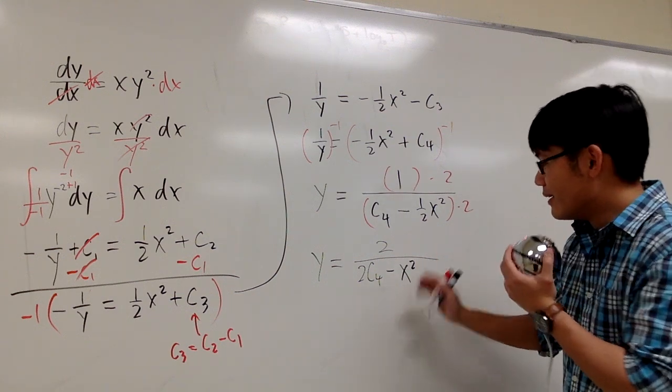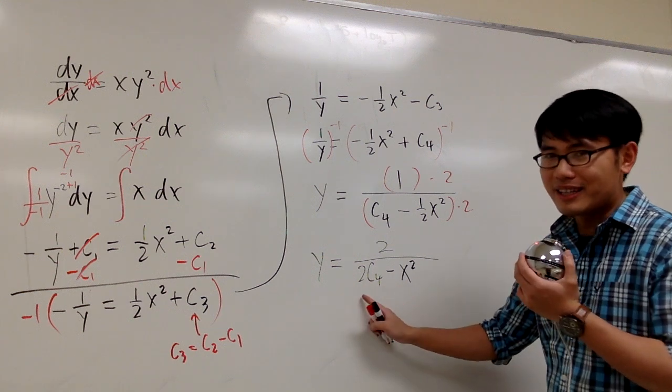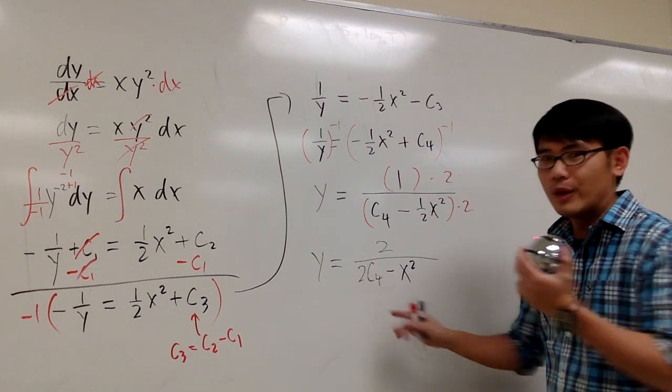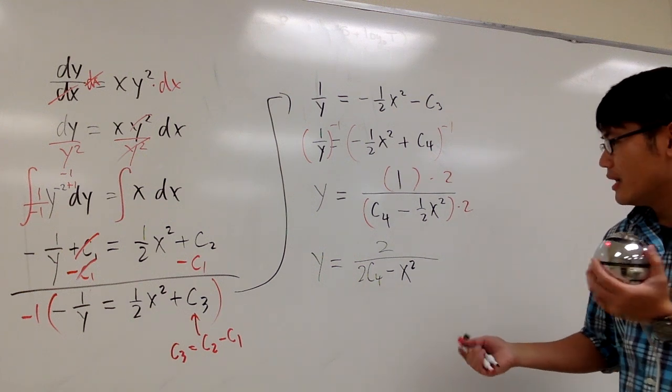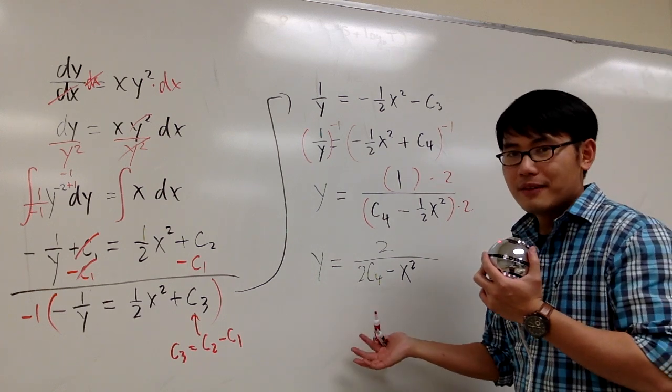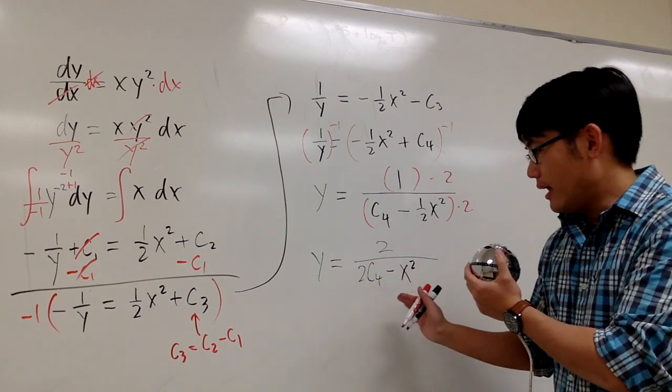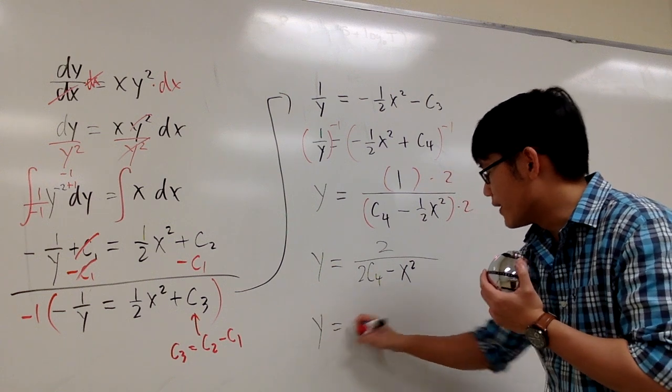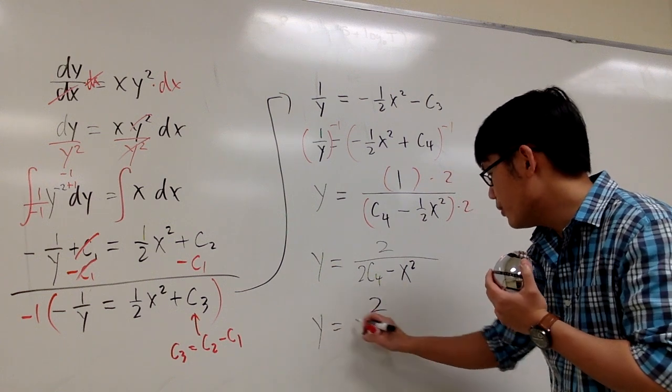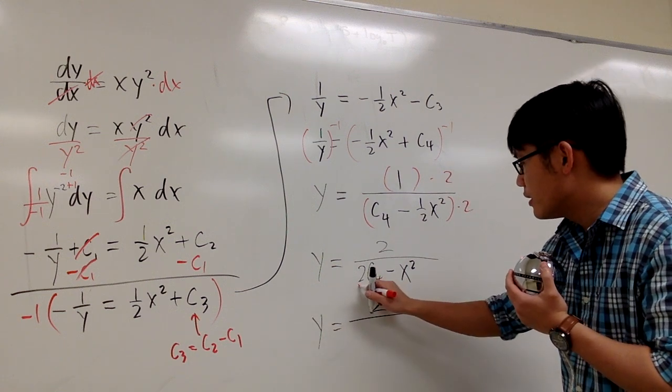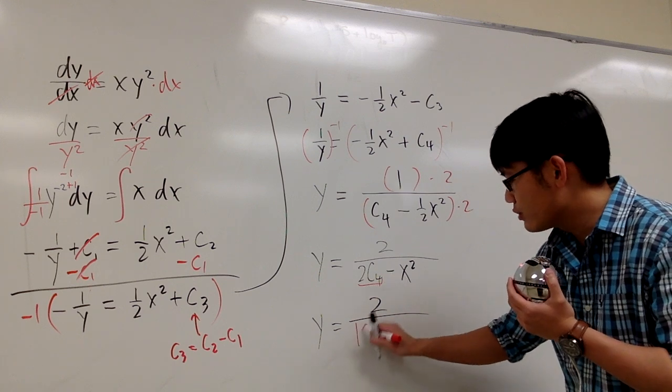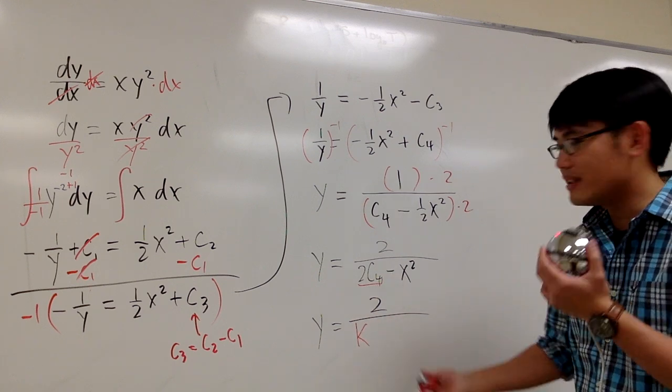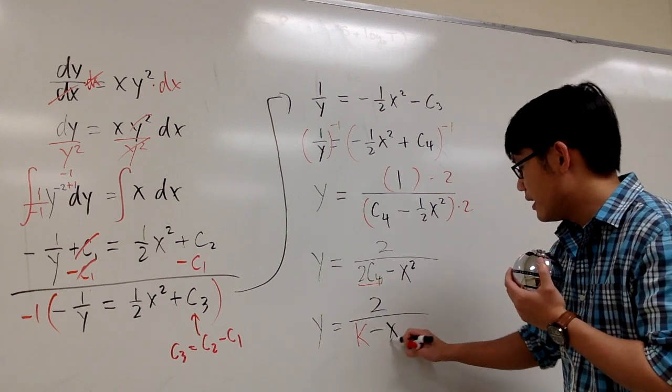And we are done. But then 2 times c4, 2 is a constant, c4 is also a constant. We can also just write it as a constant. You can use c5. But then we are at the end of the equation. So we are just going to call this the final constant. The book uses k. So we just use k for the constant. And minus x squared.